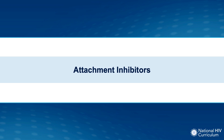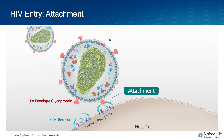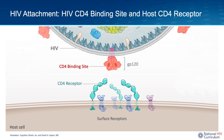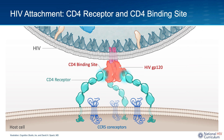Let's take a closer look at attachment inhibitors, which act at the earliest point in HIV entry. As HIV approaches a cell, the first interaction that typically occurs is the attachment of the HIV envelope glycoprotein with the host cell CD4 receptor. The outermost component of the HIV envelope, GP120, has a region known as the CD4 binding site, and since the HIV envelope is a trimer, the HIV attachment process typically involves binding of multiple GP120 subunits with CD4 receptors.